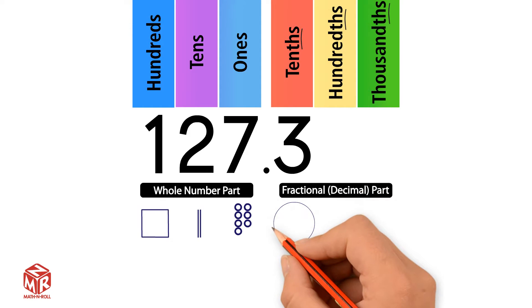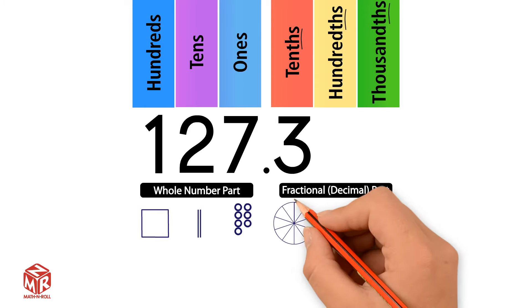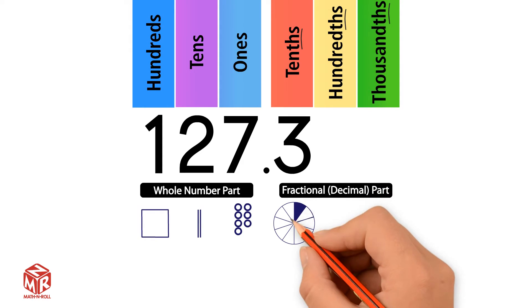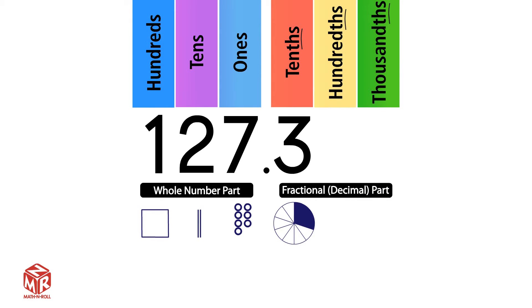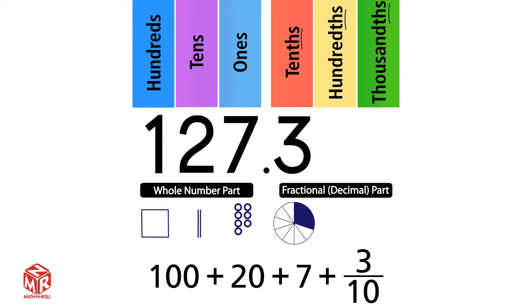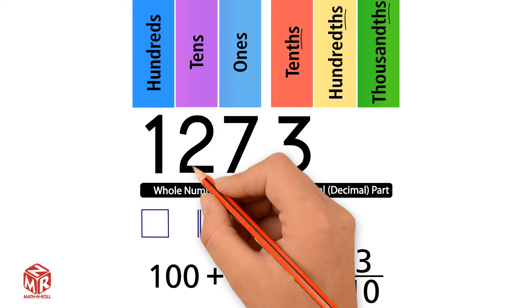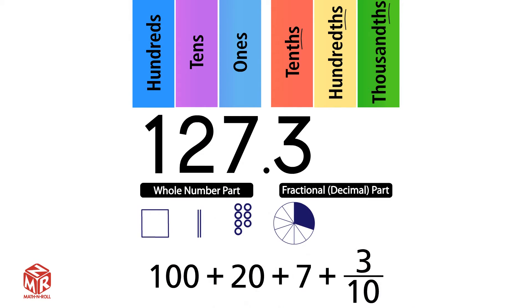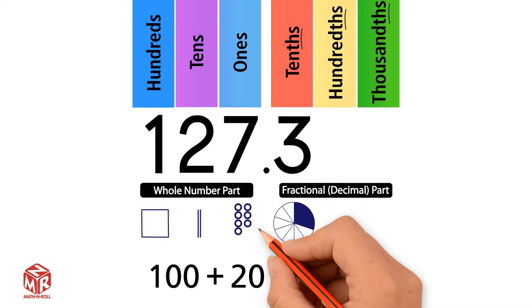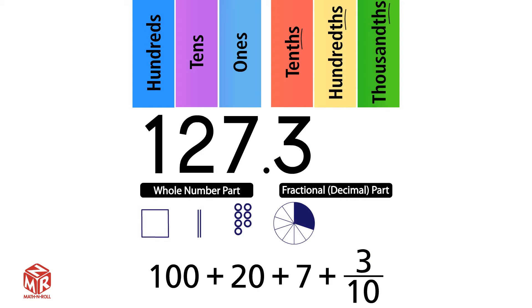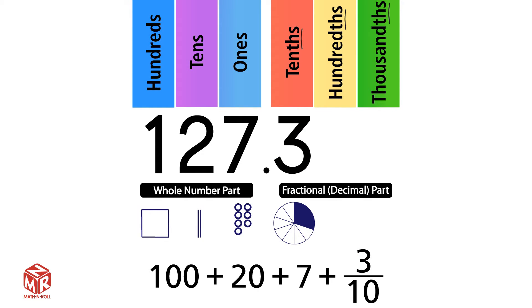So we split a circle into 10 equal parts and shade in 3 parts. 1 hundred is the same as 100. 2 tens is the same as 20. 7 ones is the same as 7. And 3 tenths is the same as 3 over 10. When we add up these values, we get 127.3.